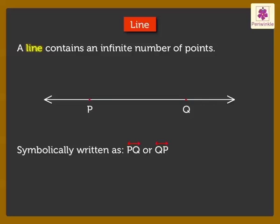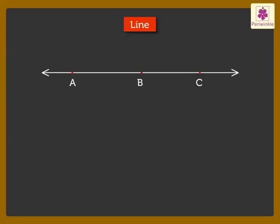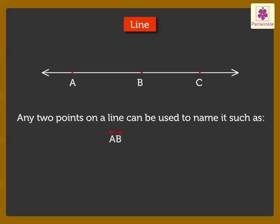We read it as line PQ or line QP. Look at this line, any two points on a line can be used to name it, such as line AB, line BC, line AC, line CB, line CA, or line BA. Now look at this line, we can also name and read the line by a single small letter, for example line L.